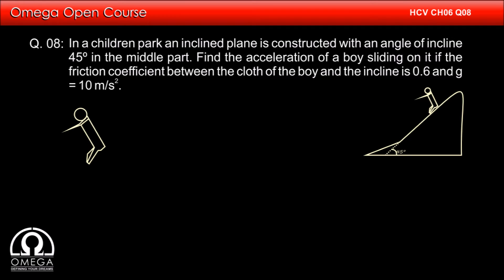Let us first draw the free body diagram of the boy. Gravitational force of mg is pulling the boy in vertically downward direction.